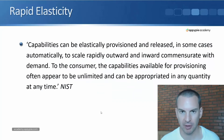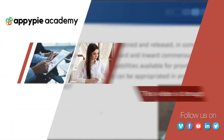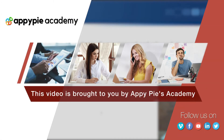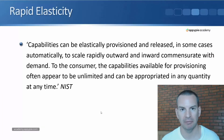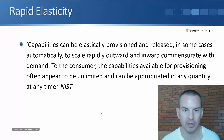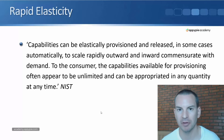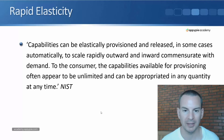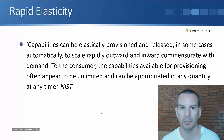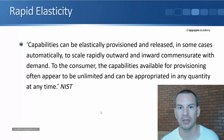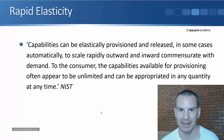The next essential characteristic to cover is Rapid Elasticity. The NIST definition is: capabilities can be elastically provisioned and released, in some cases automatically, to scale rapidly outward and inward commensurate with demand. To the consumer, the capabilities available for provisioning often appear to be unlimited and can be appropriated in any quantity at any time.